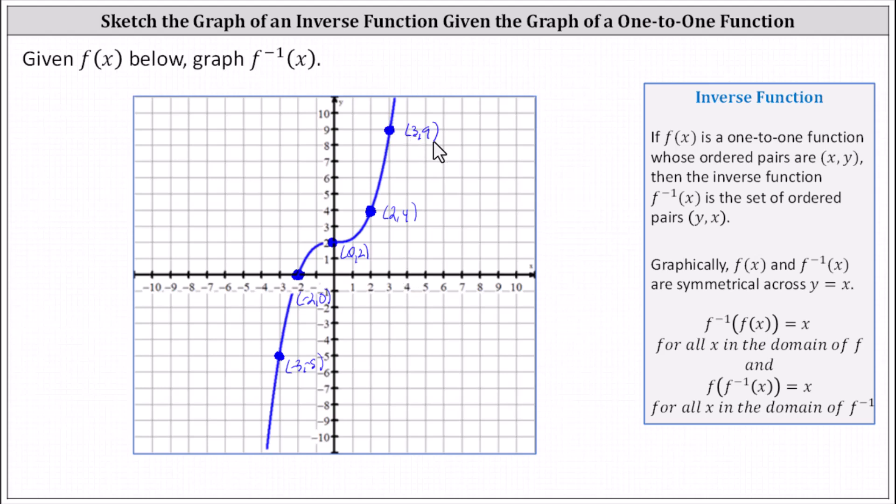So now if we interchange the x and y values for these five points, the new ordered pairs will give us points on the graph of f inverse of x. So we're interchanging the x and y values of (-3, -5), we have (-5, -3), which is here. Next, interchanging the x and y values of (-2, 0), we have (0, -2).